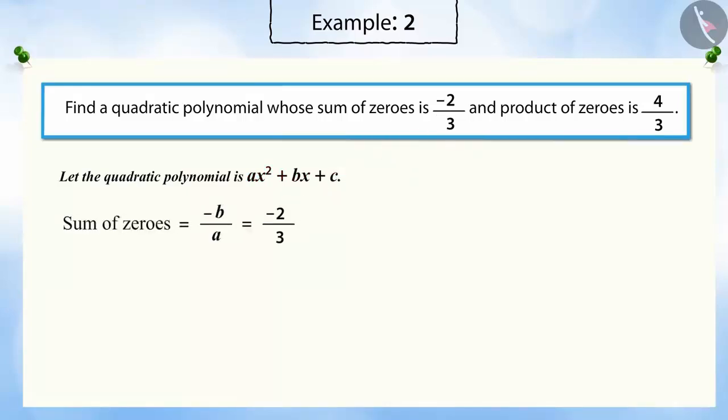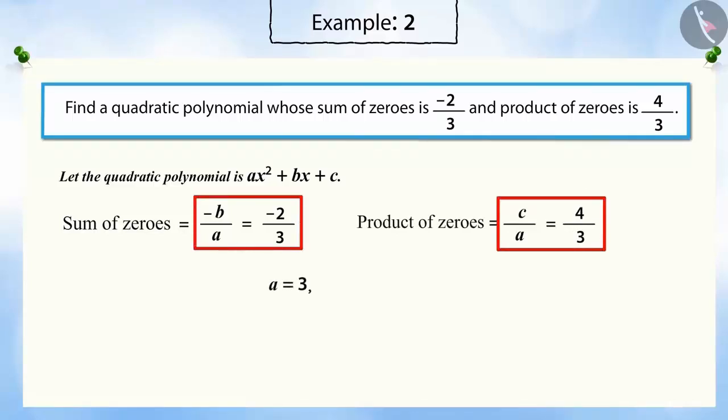We know that the sum of zeros is minus b by a and the product of the zeros is c by a. When compared, a is equal to 3, b is equal to 2 and c is equal to 4.